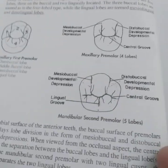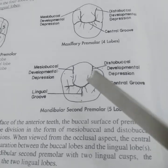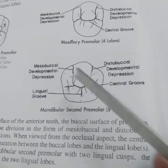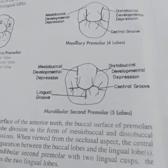This is the diagram of the mandibular second premolar with five lobes: one, two, three, four, five.